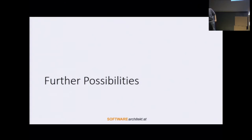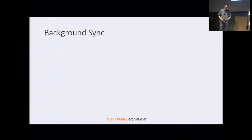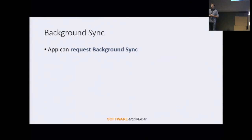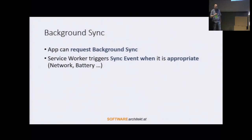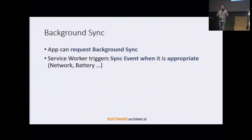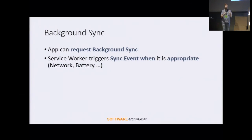Let's talk about further possibilities of progressive web applications. Progressive web applications allow for background synchronization — your application requests the background synchronization, and then the service worker triggers an event within the service worker when it is appropriate. The browser decides when it's appropriate to sync your data, taking into account things like network status or battery status. For instance, when you have a bad network connection or the battery status is very low, the browser may decide to postpone the background synchronization and trigger the event afterwards.